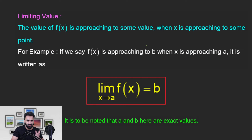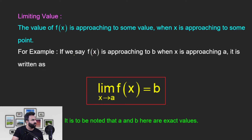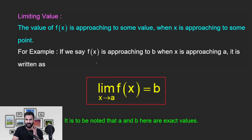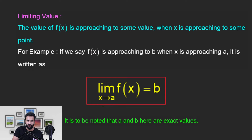यह जो चीज होती है limiting value — जो कि हमारा chapter है — उसका मतलब क्या होता है? अगर x किसी point पर approach कर रहा है, तो उसके corresponding यह जो function है, fx, वो किसको approach कर रहा है? For example, if we say fx is approaching to b, when x is approaching to a, इसको बोलते हैं limiting value। इसको लिखते हैं: LIM, x tends to a, then fx is tending to b.